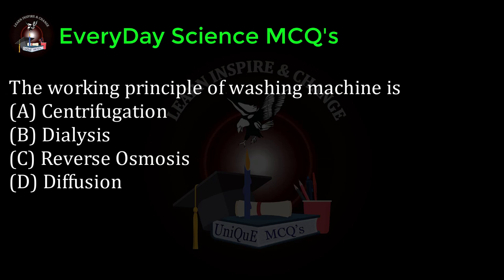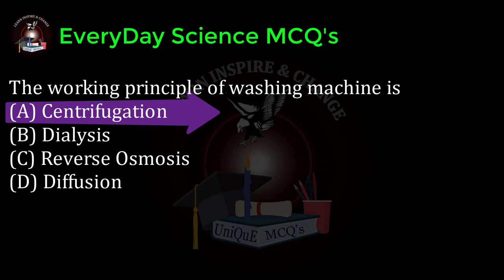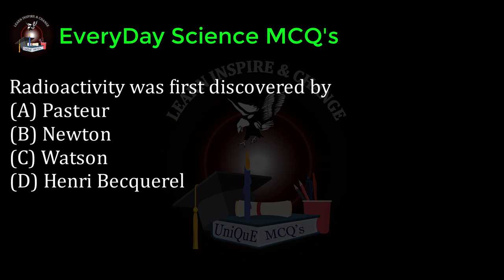The working principle of a washing machine is: a) centrifugation, b) dialysis, c) reverse osmosis, d) diffusion. Correct answer: a. Radioactivity was first discovered by: a) Pasteur, b) Newton, c) Watson, d) Henry Becquerel. Correct answer: d.